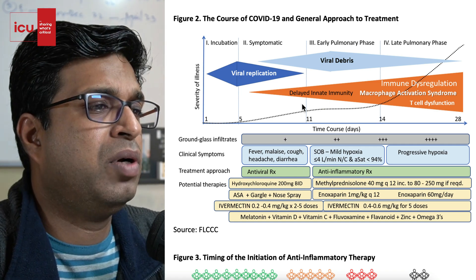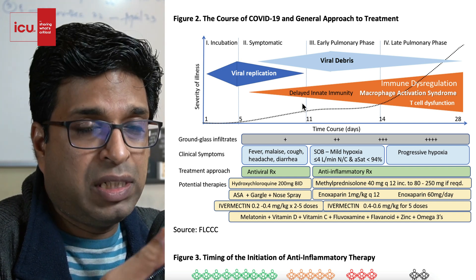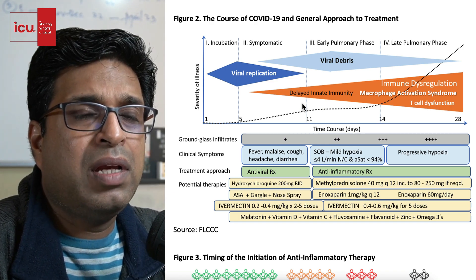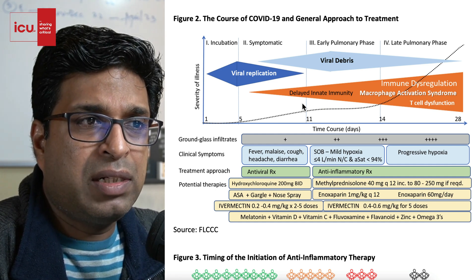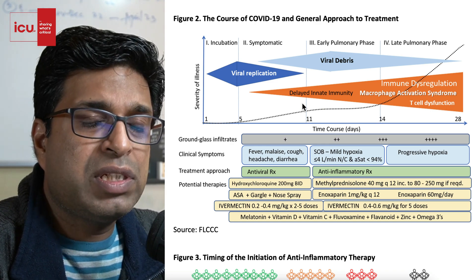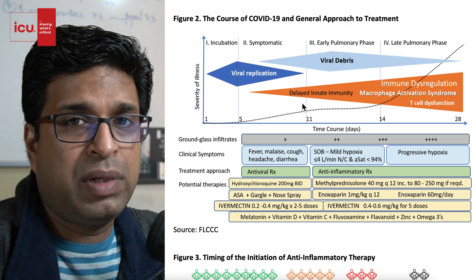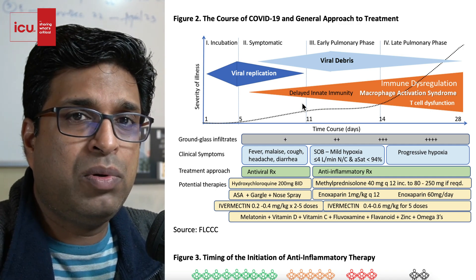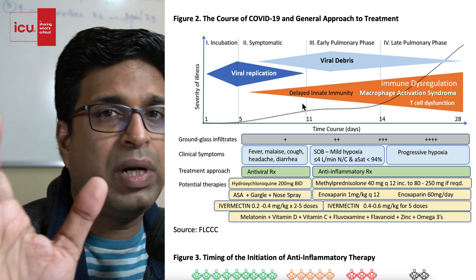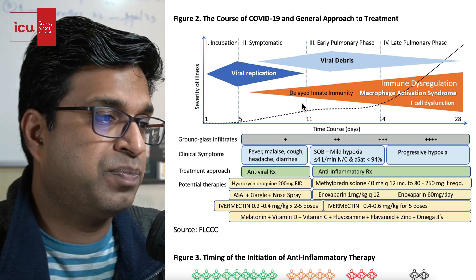We are discussing two key timing questions: when to start antiviral therapy — whether oral medications like favipiravir or IV remdesivir — and when to use steroids like methylprednisolone or dexamethasone. A third category is immunosuppressive drugs like tocilizumab. So we are dividing treatment into three things: antiviral therapy, steroids, and immunosuppression.